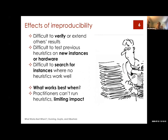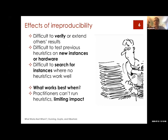We really see this as a reproducibility problem. A lot of the challenges with understanding what works best come from the fact that people are not publishing their heuristic source code. This has all sorts of negative side effects: it's difficult to verify or extend others' results, difficult to test previous heuristics on new instances and new hardware, and tough to search for instances where heuristics don't work well. Ultimately, we can't answer the key question facing practitioners: what works best for my type of problem instances? And furthermore, even if we knew that, practitioners can't actually run them without the source code. This really limits the impact of the heuristics literature.